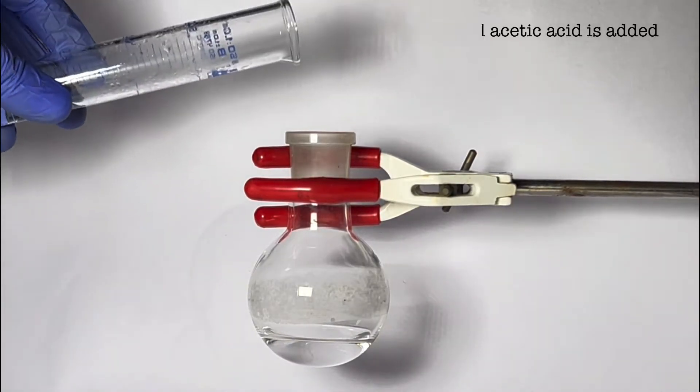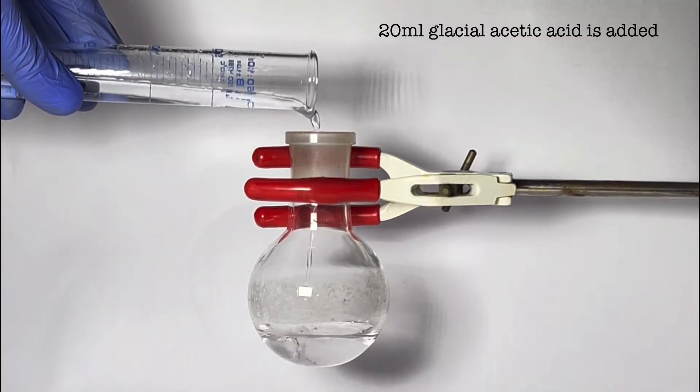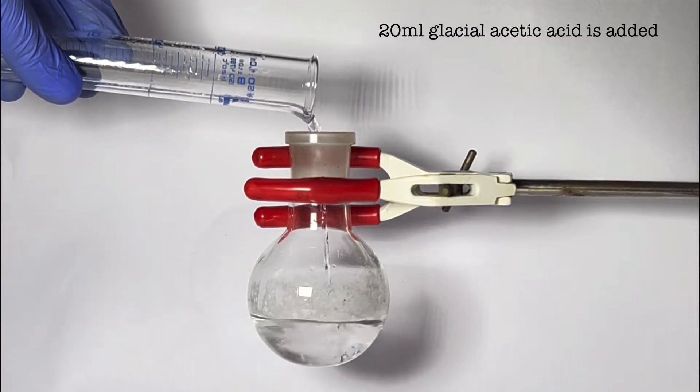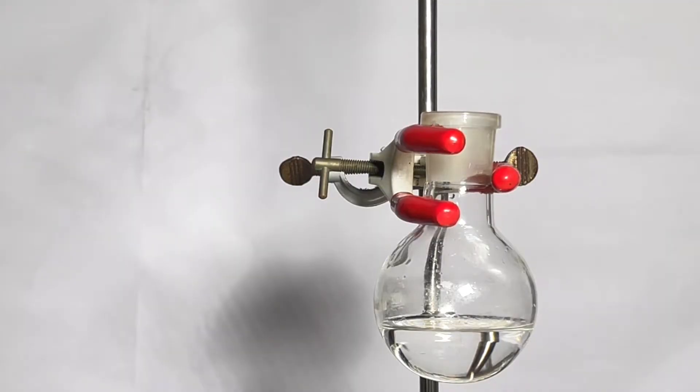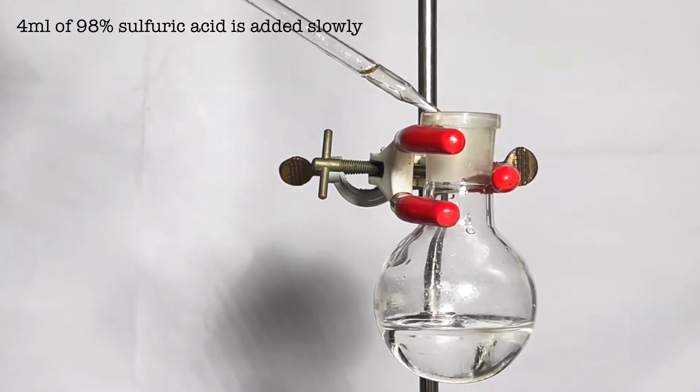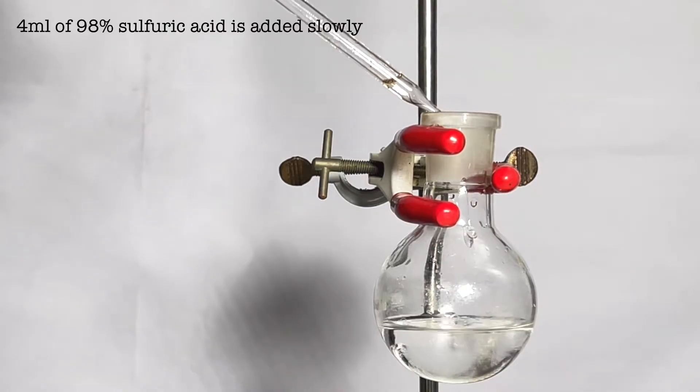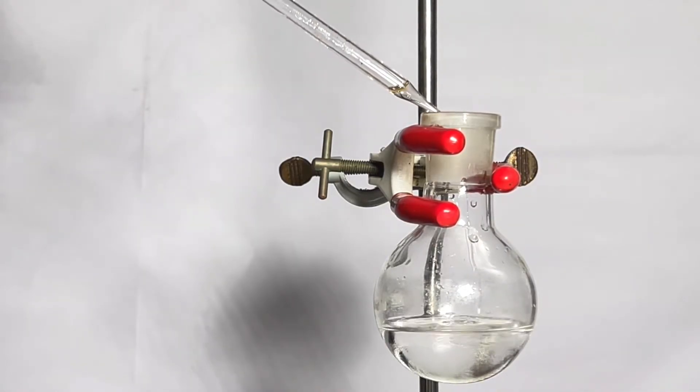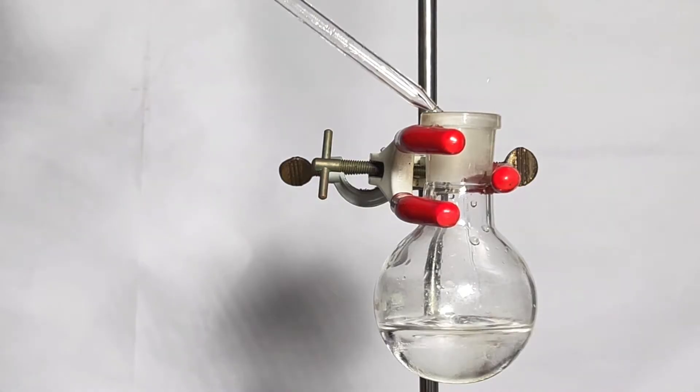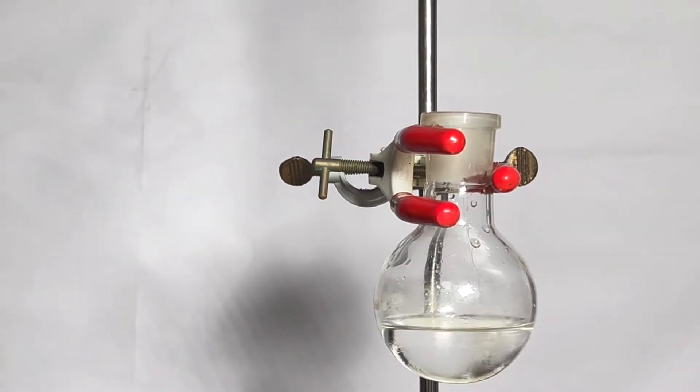Add 20 ml of glacial acetic acid. Then 4 ml of concentrated 98% sulfuric acid was added in small portions using a glass pipette. You can clearly notice a color change in the round bottom flask immediately after the addition of the sulfuric acid.